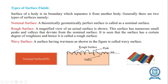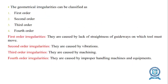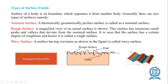The third type is the wavy surface. A surface having waviness, as shown in the figure, is called a wavy surface. The surface exhibits waviness, hence it is called a wavy surface.